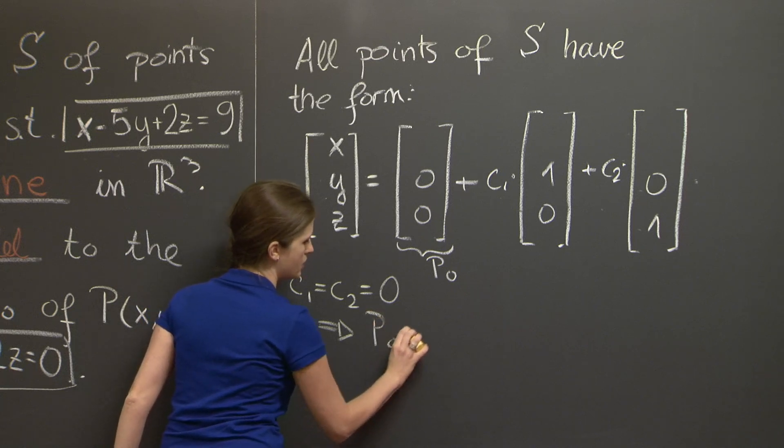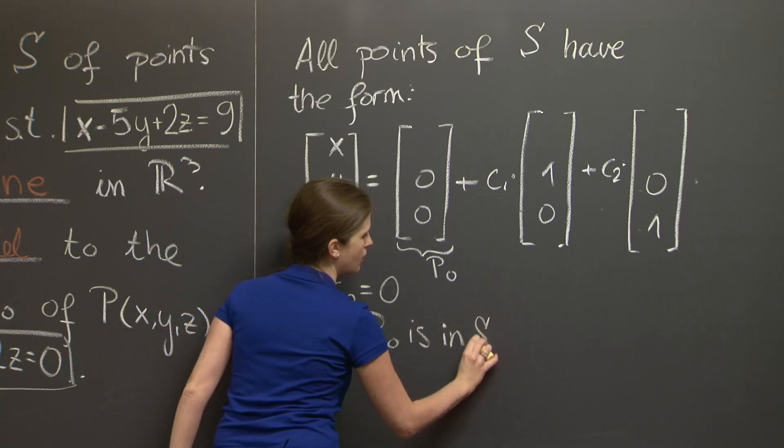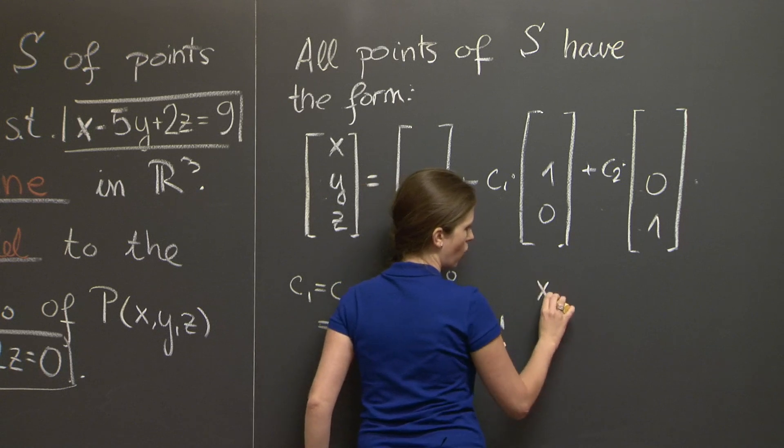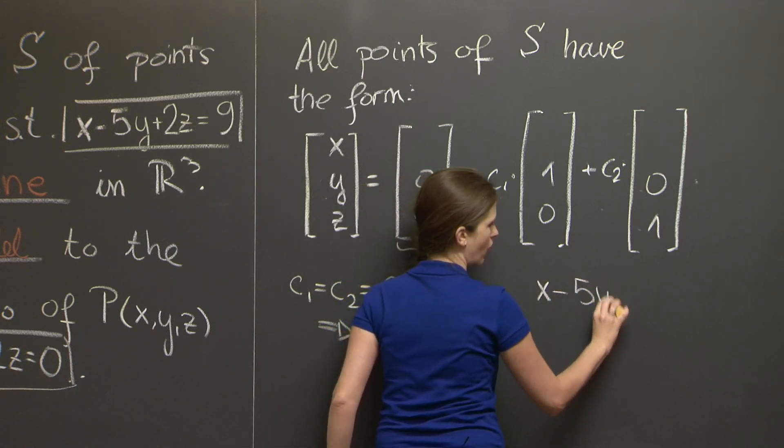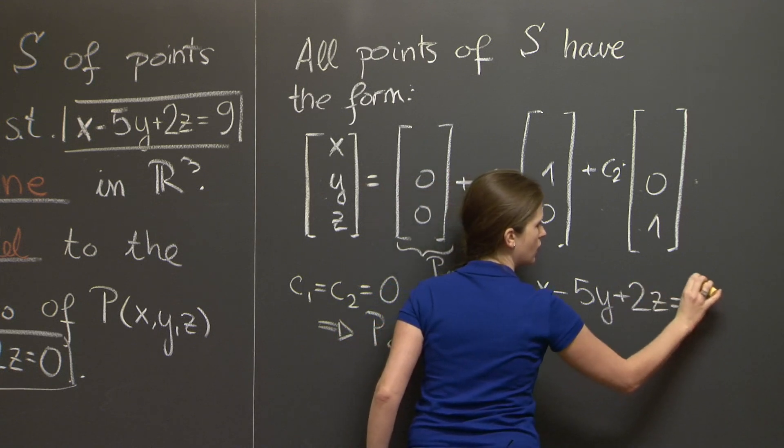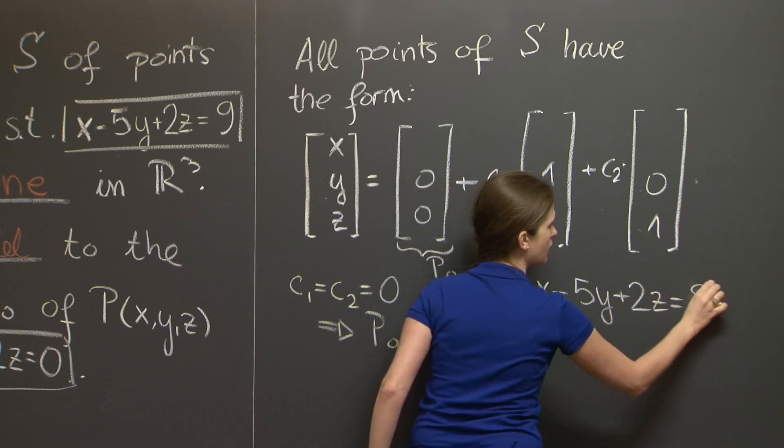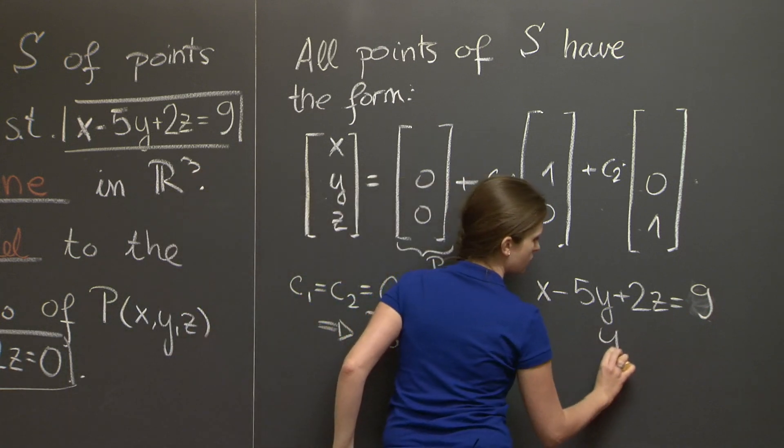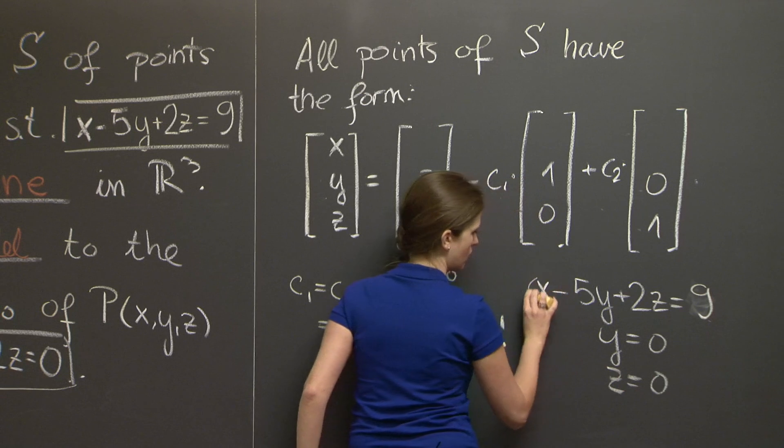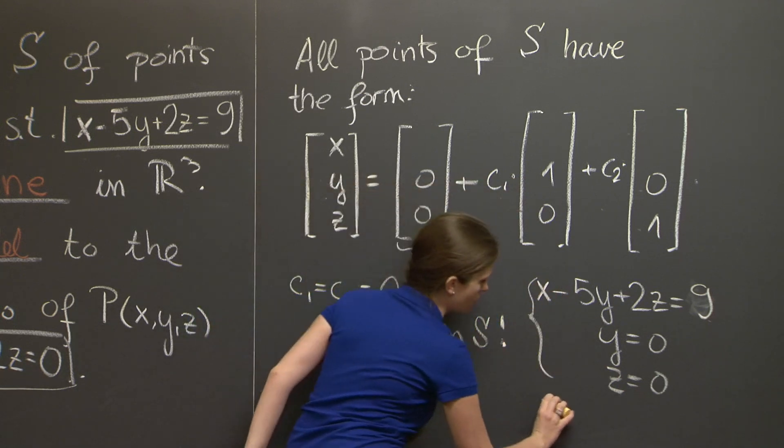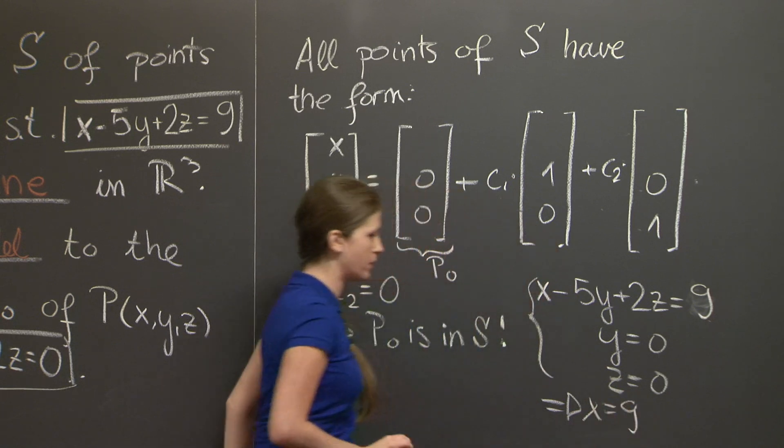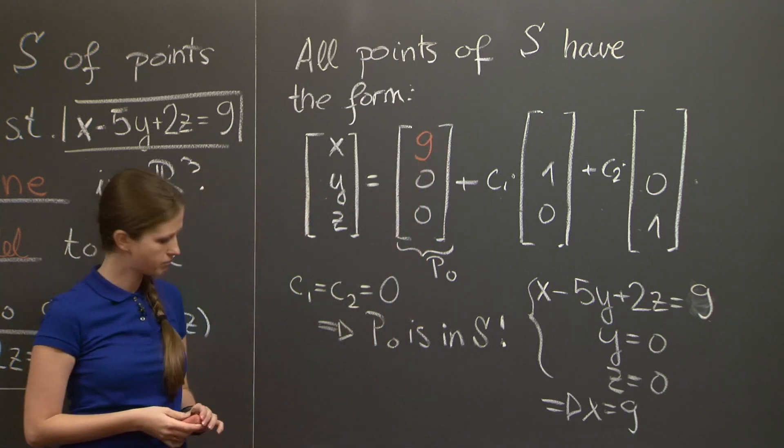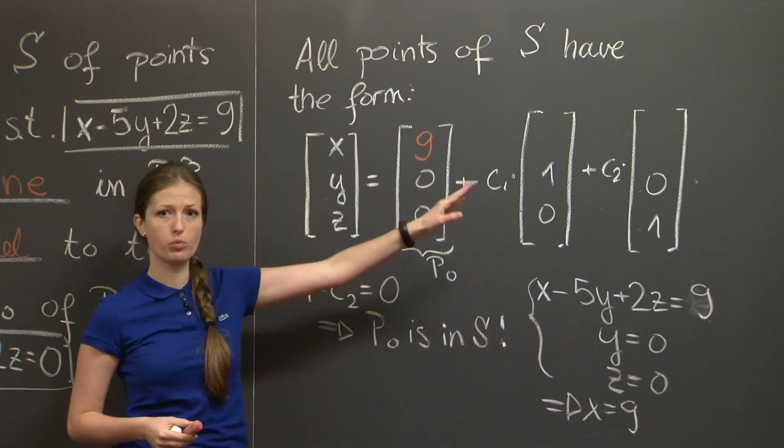So p₀ is in S. What do we know about the point p₀? Well, the fact that it's in S means that its coordinates satisfy x - 5y + 2z = 9. That's the equation of S. But we also know that y and z are equal to 0 and 0. Solving this system, we get that the x-coordinate of this point p₀ is 9. And we can just add 9 here. So we just have two blanks left to fill.